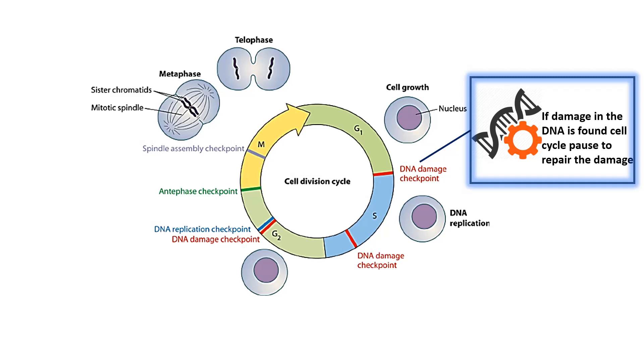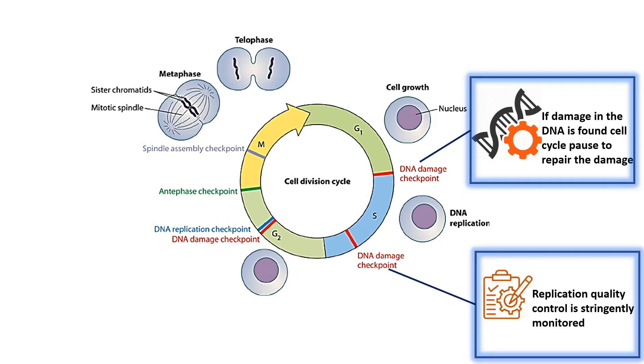But if not, it decides whether the cell should progress into the cell cycle or not. Another important checkpoint is at S phase because S phase is very important for a cell's life. At this phase, the cells replicate their DNA and get ready to segregate their DNA to its daughter.